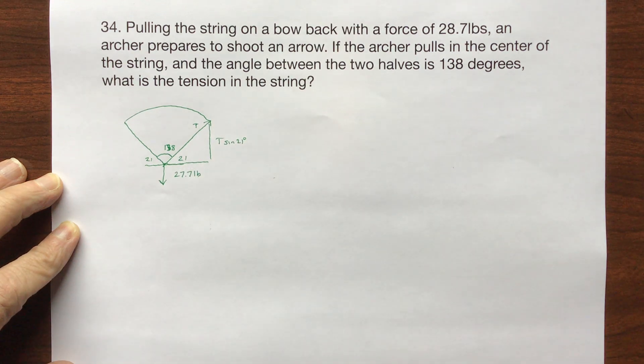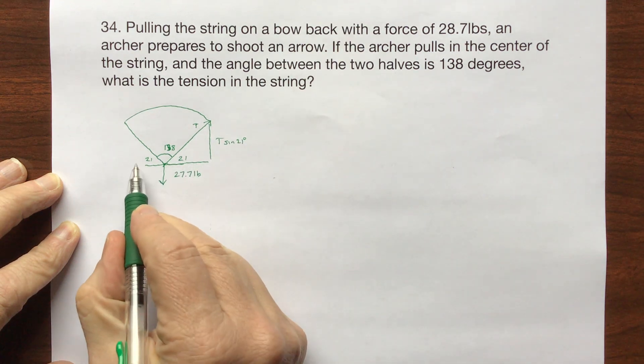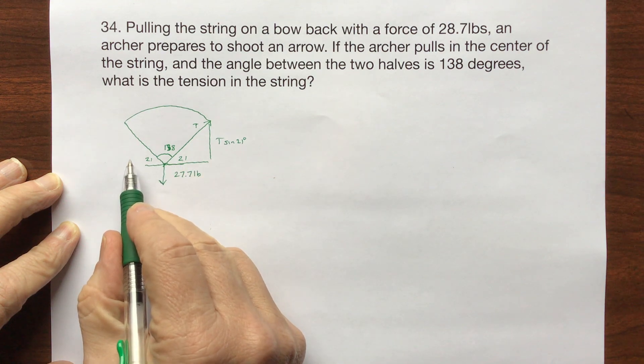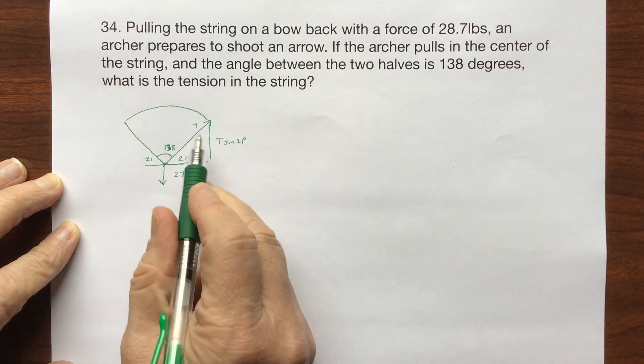Now T times the cosine will cancel because I've got the same amount going this way and the same amount going this way, but these tensions are going to double.